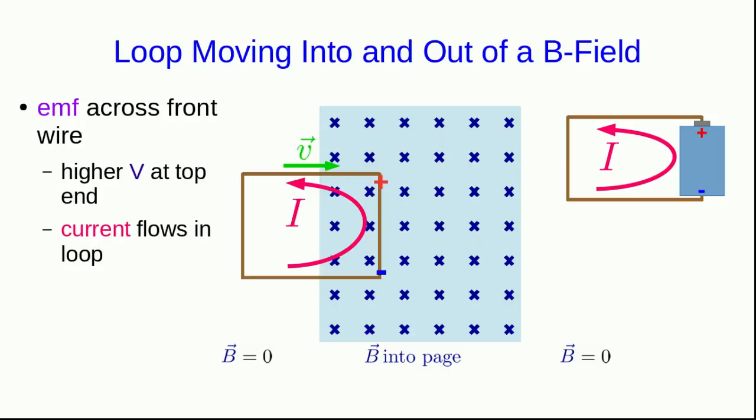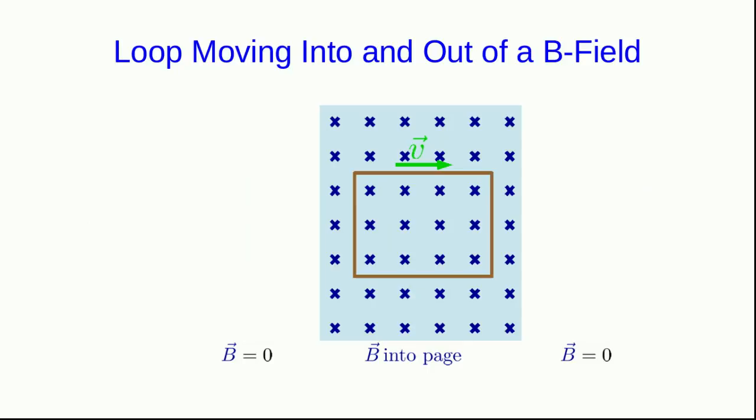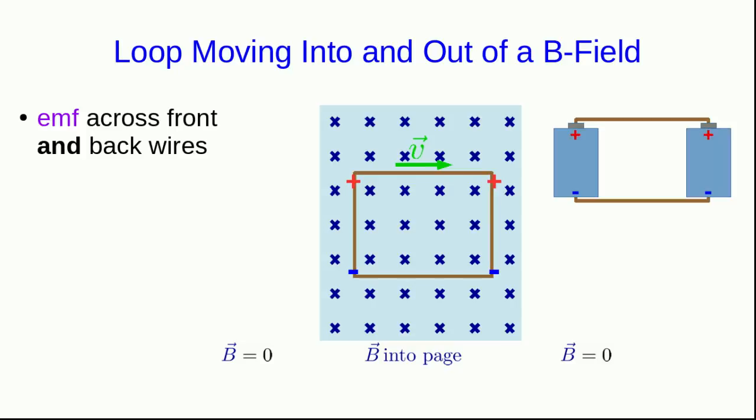A current will flow in the loop. In this case, it's going to go counterclockwise. Well, now later, the whole loop is inside the region of B field. Now there's an EMF across both the front and back wires. It's just like we'd set up this situation with batteries.